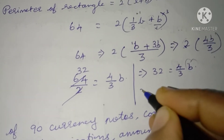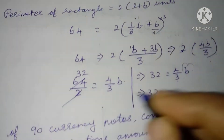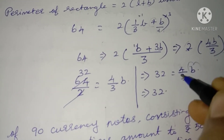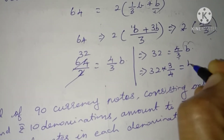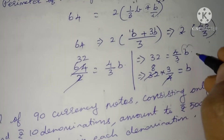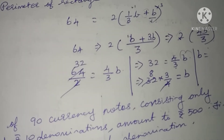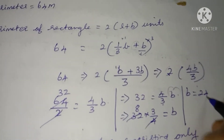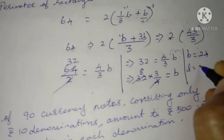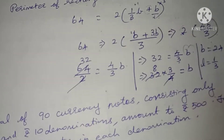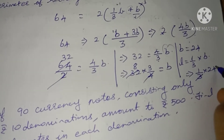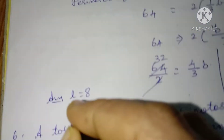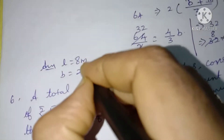We need only the B value. So bring 4 by 3 to the left hand side. If you take 4 by 3 to the left hand side, for a fraction you have to take the reciprocal: 3 by 4 times 32 equals B. In the 4 table, 8 times. Therefore, B value is equal to 24 and L value equals 1 by 3 into 24, which equals 8. Therefore, your answer is L equal to 8 meters and B equal to 24 meters.